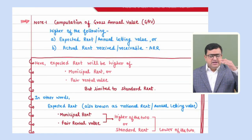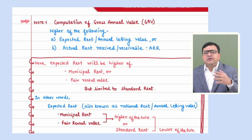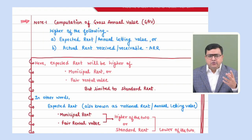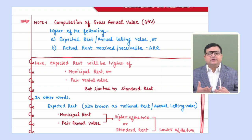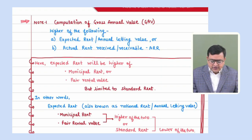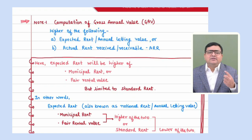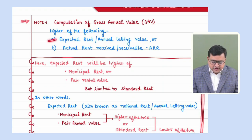GAV is the starting point for computing house property income. For self-occupied property, NAV becomes the starting point, but generally for any other house property — let out or deemed to be let out — GAV is the starting point. GAV would be higher of two limits: your expected rent or actual rent received or receivable, whichever is higher. Expected rent can also be known as notional rent or annual letting value.